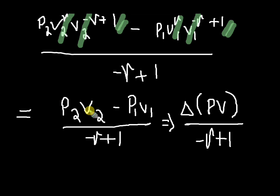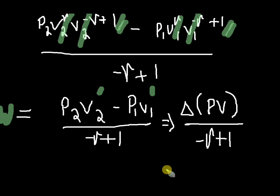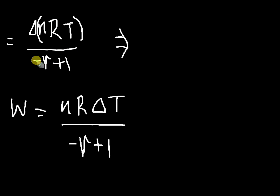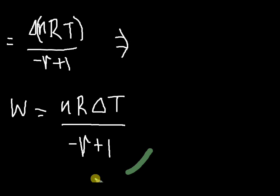What remains is P2 V2 raised to 1 and P1 V1 raised to 1, so work done equals P2V2 minus P1V1 divided by minus gamma plus 1. This implies work equals change in PV divided by minus gamma plus 1. We know that PV equals nRT from the ideal gas equation. Substituting PV by nRT, we get work equals nR delta T by minus gamma plus 1. This is the relation for the work done in an adiabatic process.